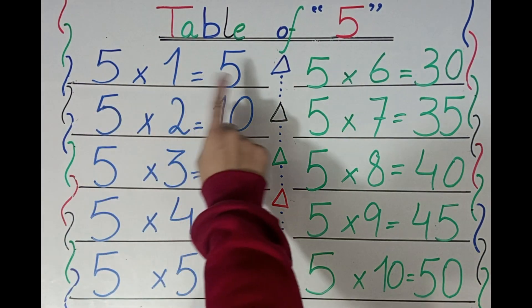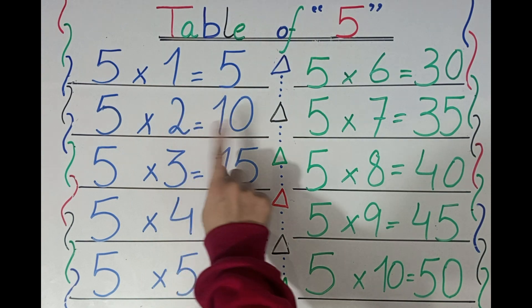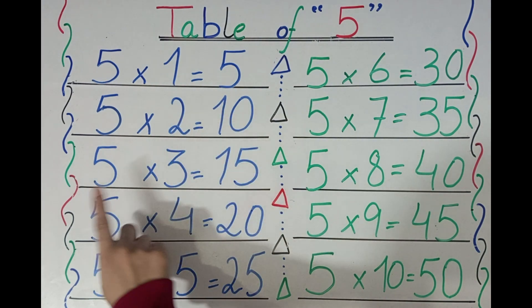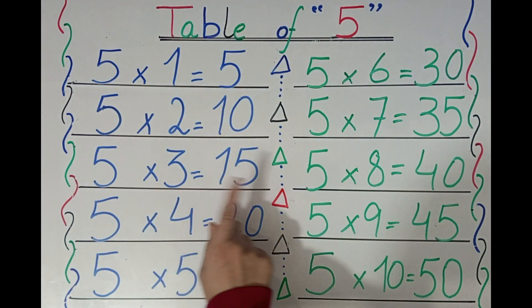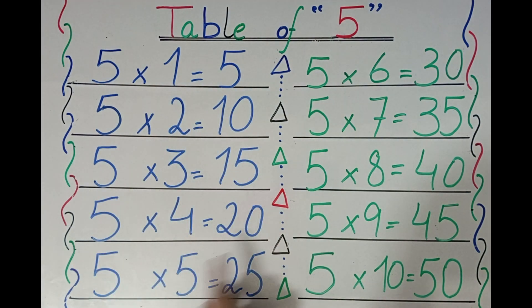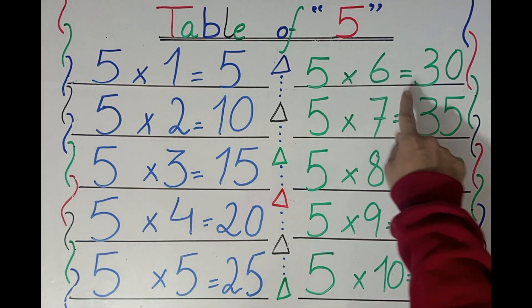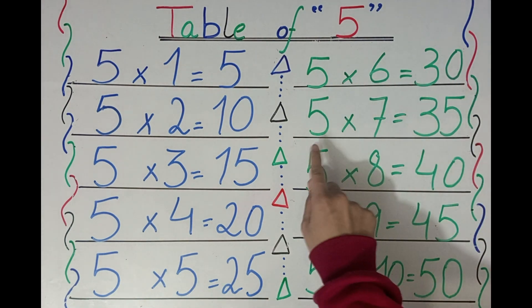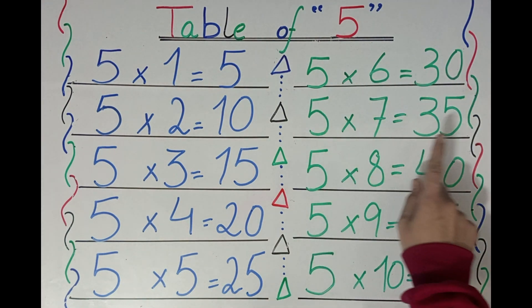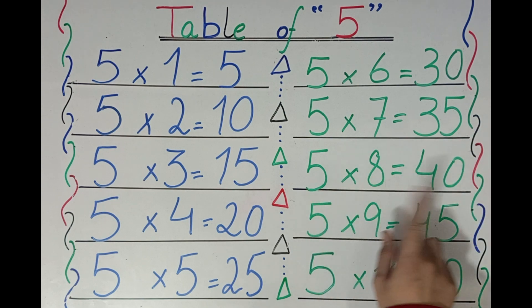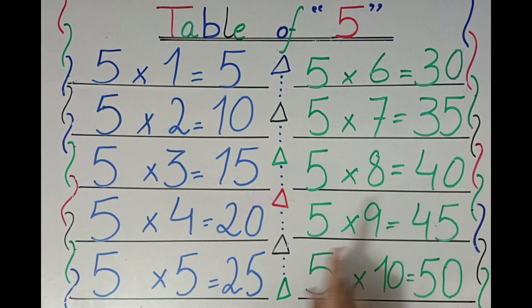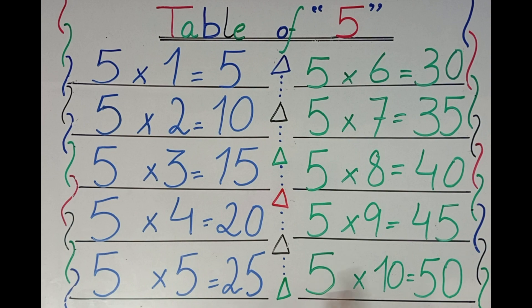So, five ones are five. Five twos are ten. Five threes are fifteen. Five fours are twenty. Five fives are twenty-five. Five sixes are thirty. Five sevens are thirty-five. Five eights are forty. Five nines are forty-five. Five tens are fifty.